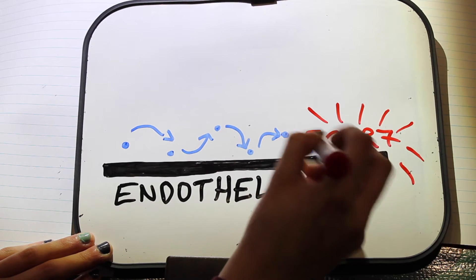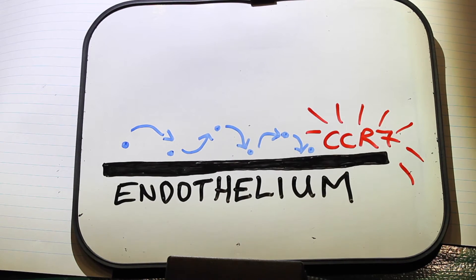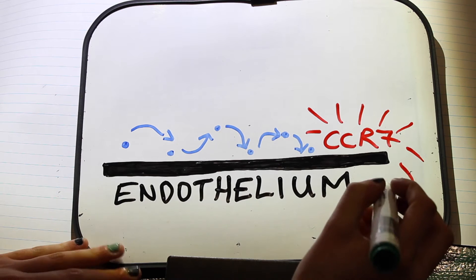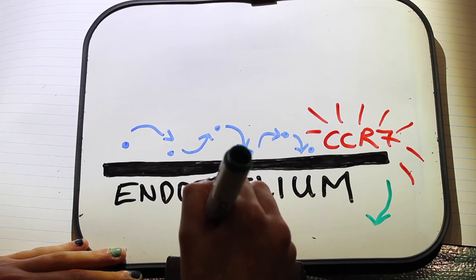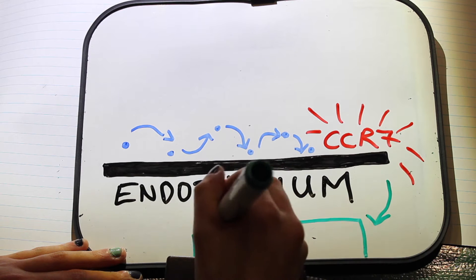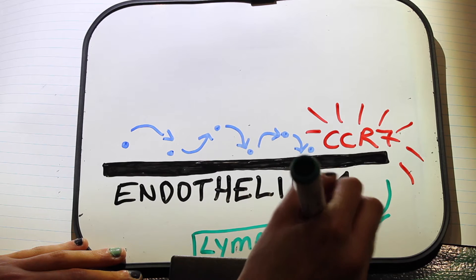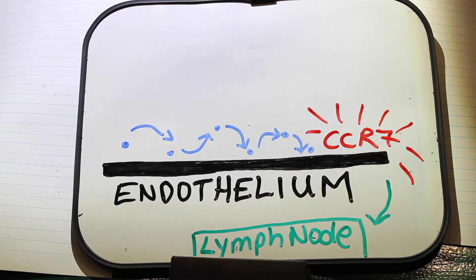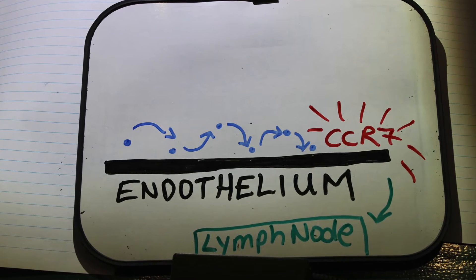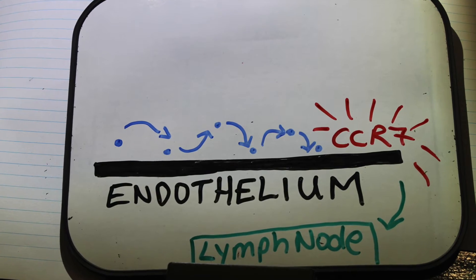This interaction causes conformational change in the LFA1, a leukocyte integrin on the naive T-cell, which increases its affinity for its ligand on the APC. These interactions enable migration of the naive T-cell across the endothelium into the lymph node to come into contact with APC dendritic cell.